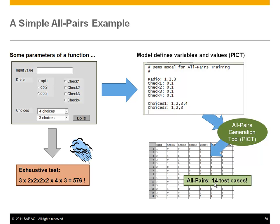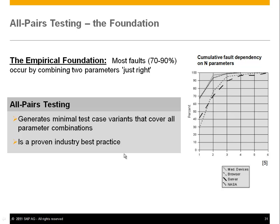You may wonder why it's possible to do almost the same thing with 14 test cases instead of 576. There is a serious empirical foundation: most faults — between 70 and 90% — can be exposed by combining just two parameters in the right way. For example, if a function has three arguments P1, P2, P3, most faults will show up when, say, P2 is 2 and P3 is 3, causing the method to blow up.